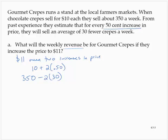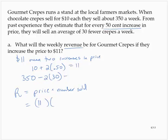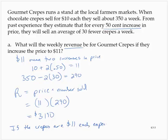The revenue is equal to the price times the number sold. So the price is $11, and the number sold would be 350 minus 60, which is 290. So 11 times 290 is $3,190. If the crepes are $11 each, the expected revenue is $3,190.